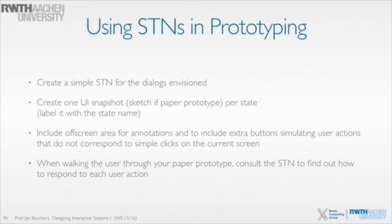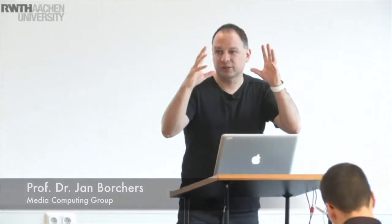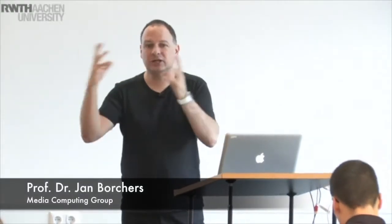It's fairly easy. The first approach, if you want to use an SDN in prototyping, you can do the following. You can say, I've got a couple dialogues that I'm thinking about putting into my system. This is how I imagine the interaction to happen. And then you basically just draw an SDN for each of those states. The SDN basically has one state per dialogue, so from dialogue to dialogue you have those transitions that happen because the user does something.